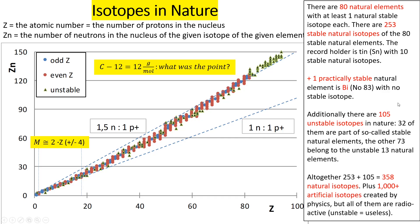We also have 105 unstable natural isotopes, and the problem is that 32 of them — shown as triangles — are within the so-called stable elements. We should really consider during this lecture whether these elements can truly be called stable or not.